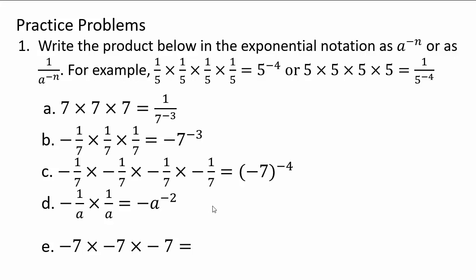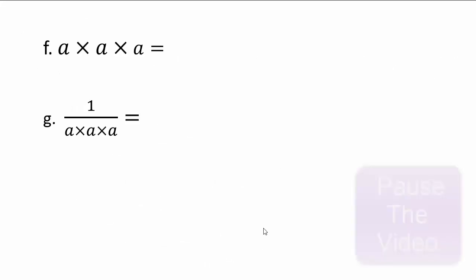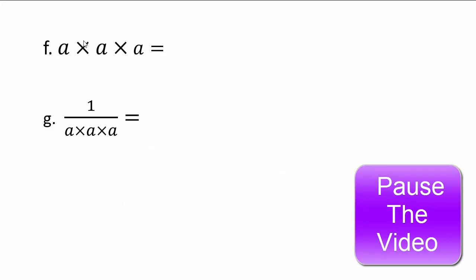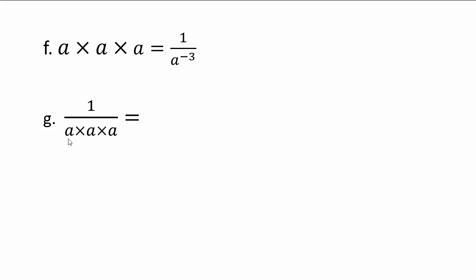It's very important to keep track of what these negatives do. A negative exponent makes it go from numerator to denominator or denominator to numerator. The negative sign simply makes the quantity negative — that's different from a negative exponent. Here, negative 7 times negative 7 times negative 7, multiplied three times, is negative 7 to the third power. Written as a negative exponent it becomes negative 7 to the negative third in the denominator. Here, a times a times a in the numerator means a to the negative 3 in the denominator, and a multiplied by itself three times in the denominator gives a to the negative third.